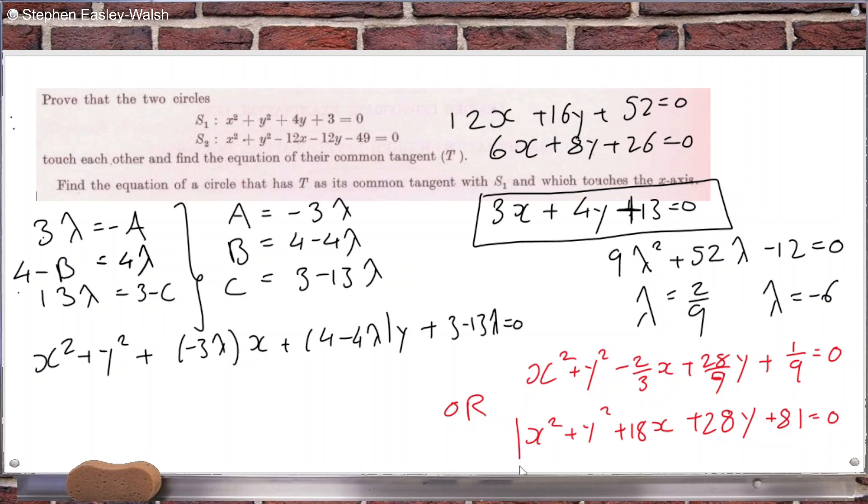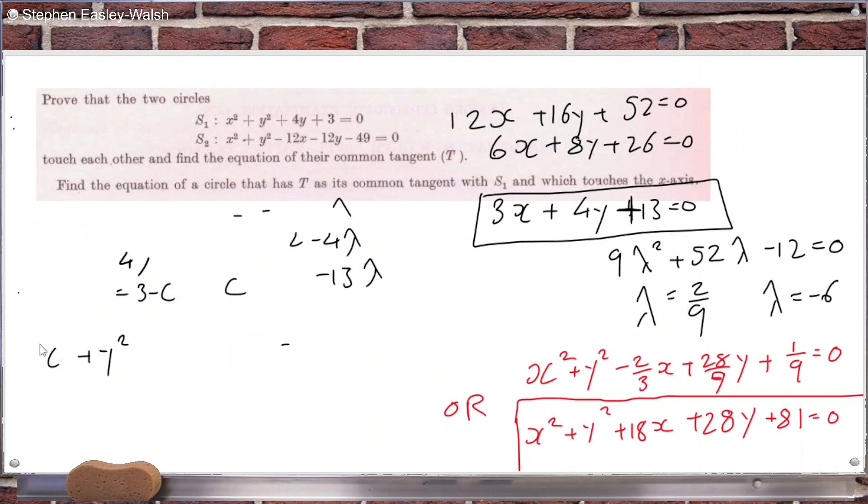So it's probably this one they would have in the marking scheme. I do wonder if both work. I guess there is one way we can check. So we need this to have a common tangent of what we just found earlier with the circle S1. So we can check if the common tangent is correct and we can check if it touches the x-axis. And then we can know if both are possible answers or if we need to choose one.